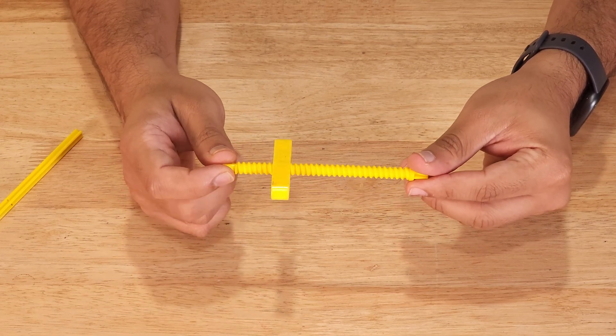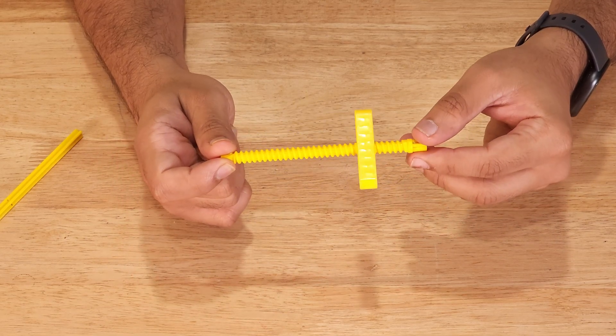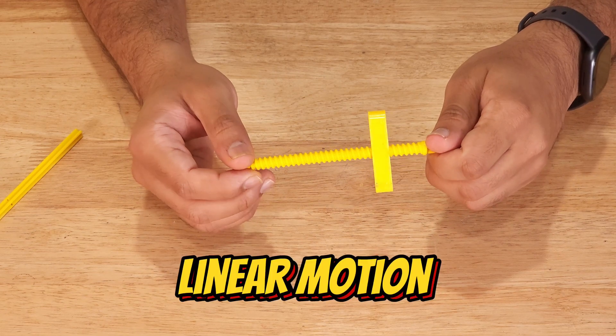When we rotate the screw, the nut can travel inside this power screw. Power screw converts rotational motion into linear motion.